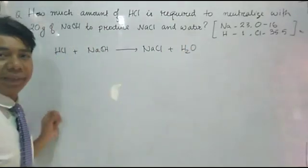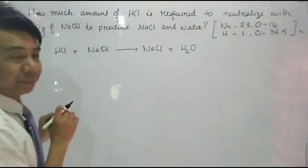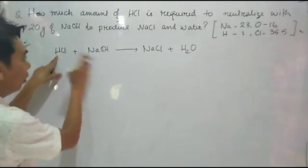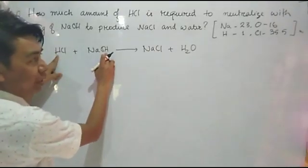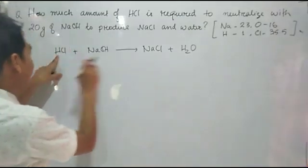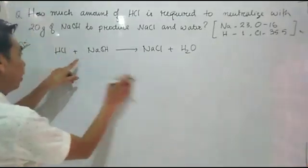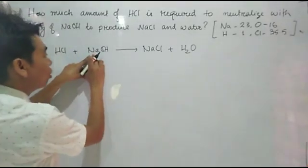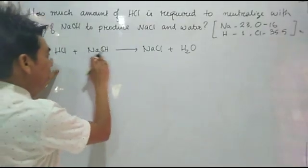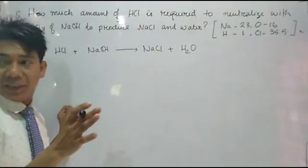This is the chemical reaction. You need to balance it. On the reactant side: hydrogen — 2, chlorine — 1, sodium — 1. On the product side the same counts match. According to this reaction, the reaction is already balanced.